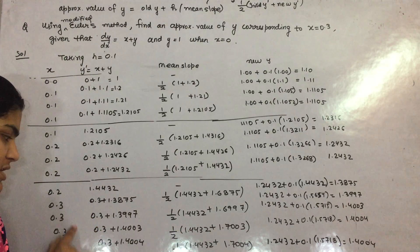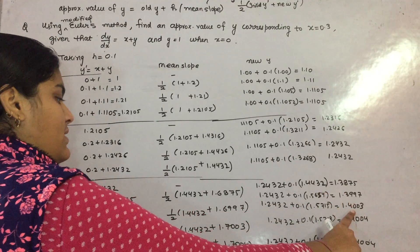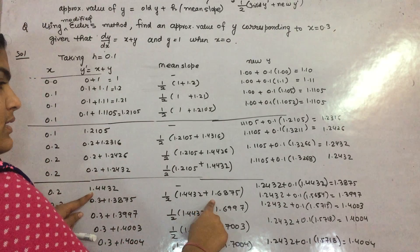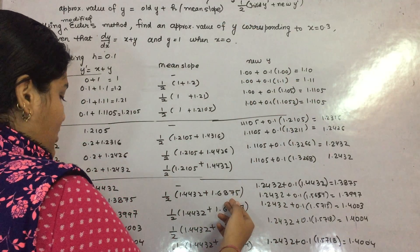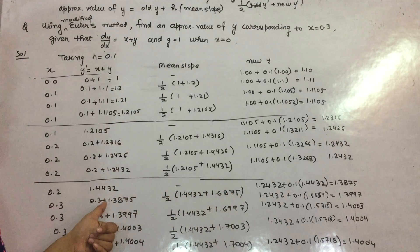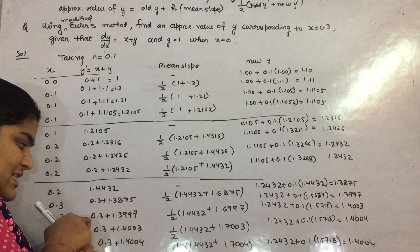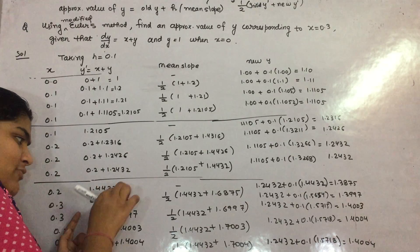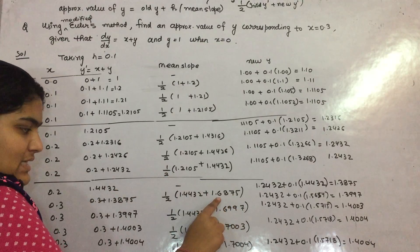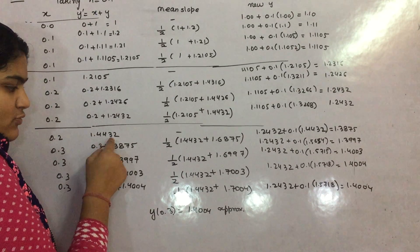In further steps the interval remains the same. The last value given in the question is x equals 0.3, and you take your initial y. The mean slope is half of the initial y-dash plus the new y-dash. The new y-dash is 1.6875, found by adding the successive values. In the second step, your new y-dash is 1.4432, computed from the new x plus the updated y.